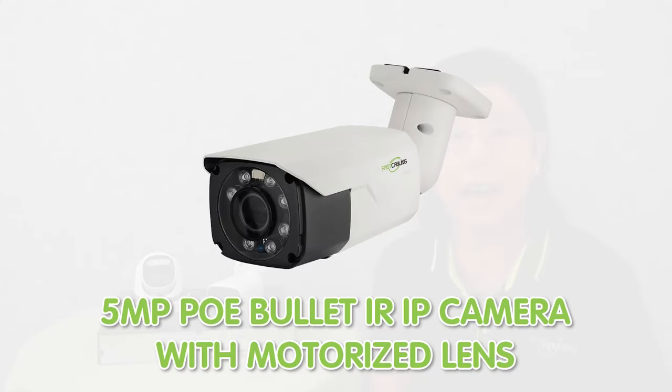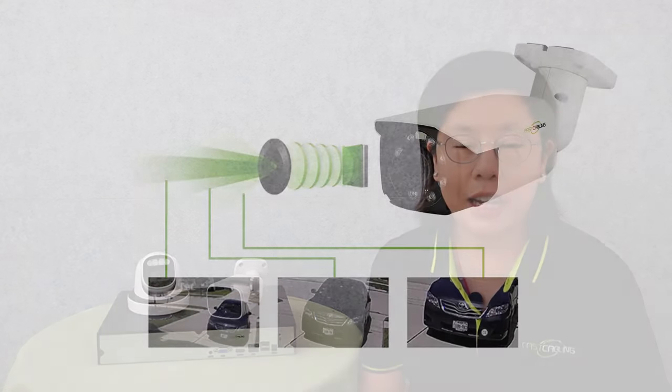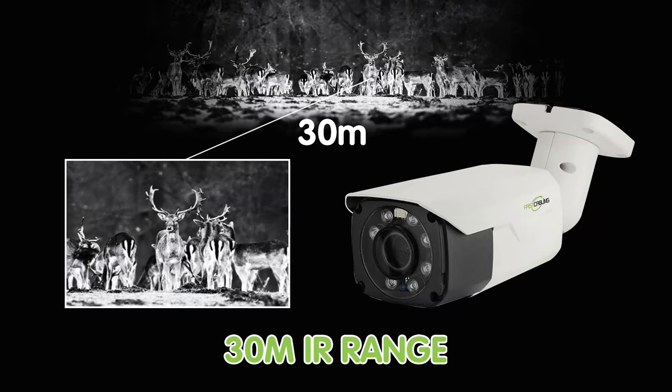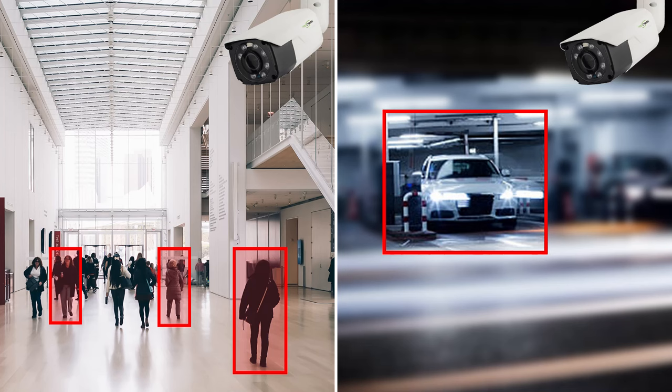This one right here is our 5MP PoE Bullet IR-IP camera with motorized lens. It is useful in situations where you need to monitor a large area or zoom in on a specific detail. The 2.8–12mm motorized lens allows you to adjust the focal length remotely with no manual adjustment required. It can provide excellent night vision up to 30 meters IR range, allowing you to monitor your property even in complete darkness, and it is also equipped with human and vehicle detection, ensuring you never miss an important event.